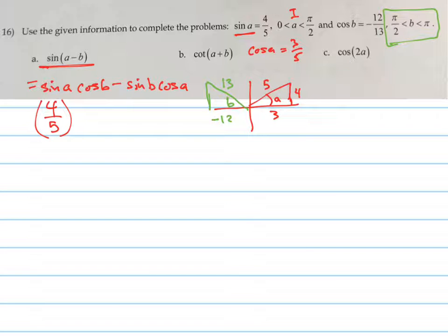So this is a 5-12-13. It's positive, so the sine of B is positive five over 13.